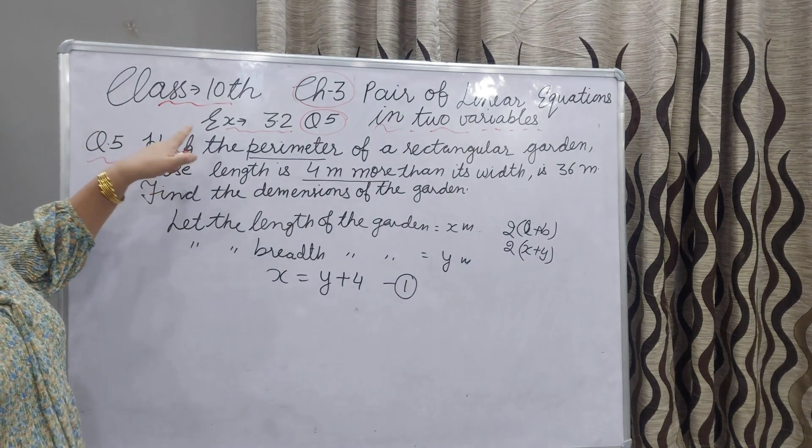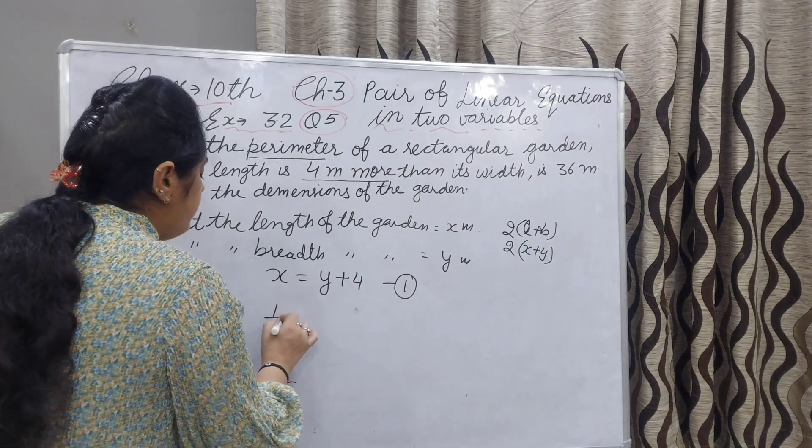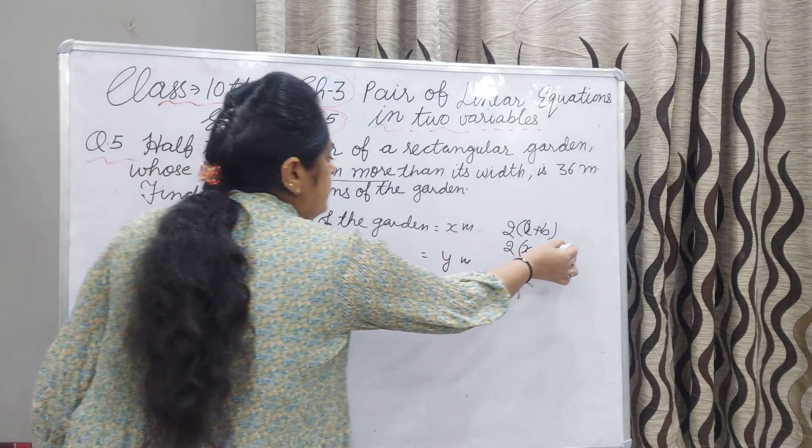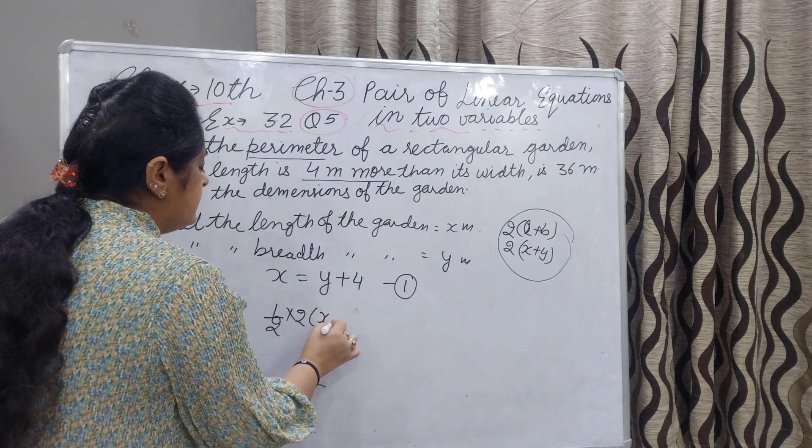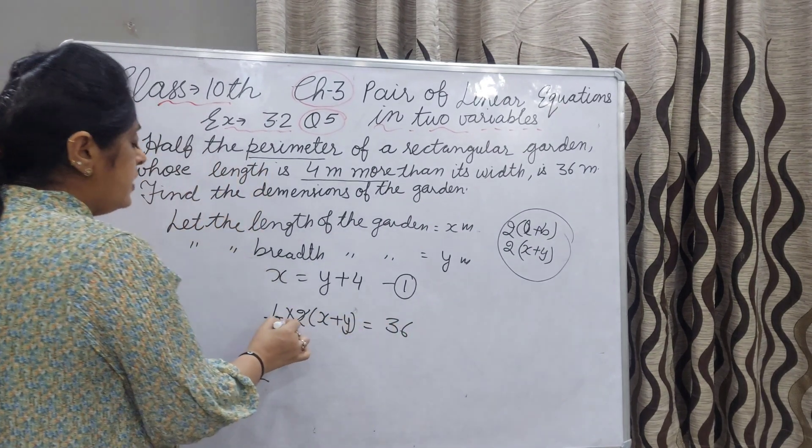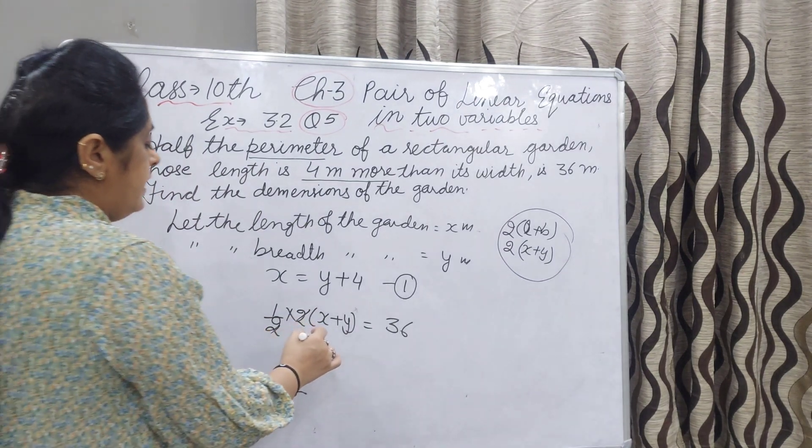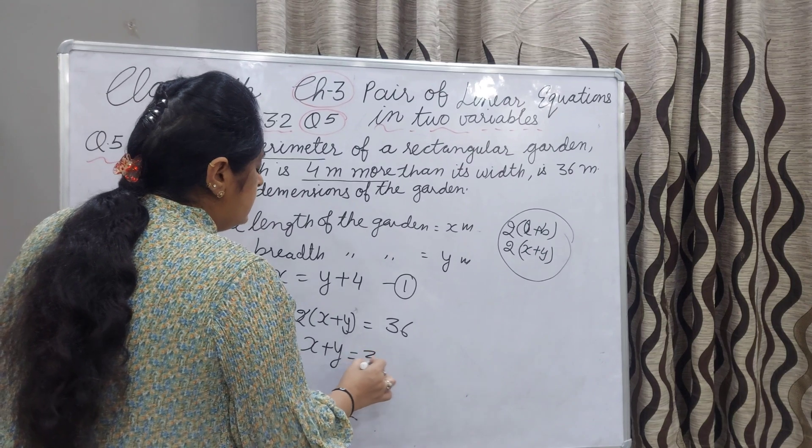But according to the equation, half of the perimeter is 36. This 2 and 2 will be cancelled, and our second equation is x plus y equal to 36.